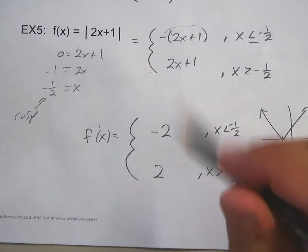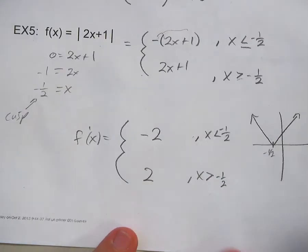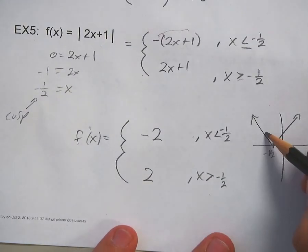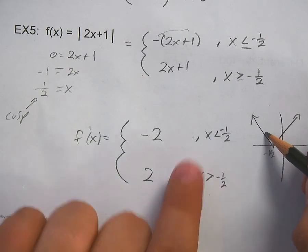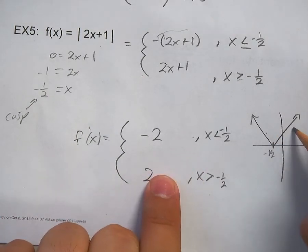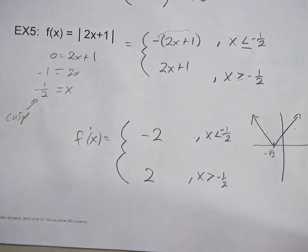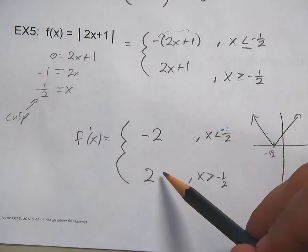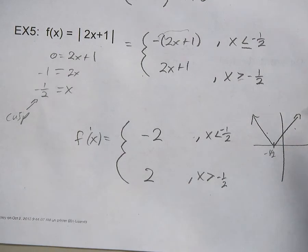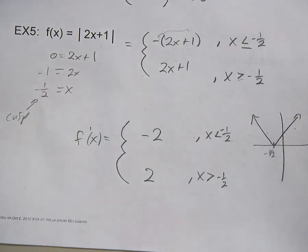The slope of the line to the left is negative two and the slope of the line to the right is positive two. Graph it out and see if it makes sense. For example, two x squared plus four is obviously not the derivative of this because it's a line. Just graph it out and see if it makes sense.